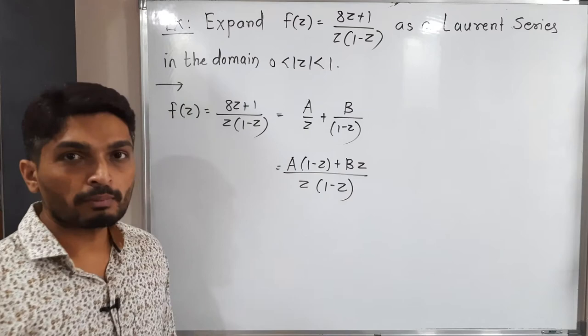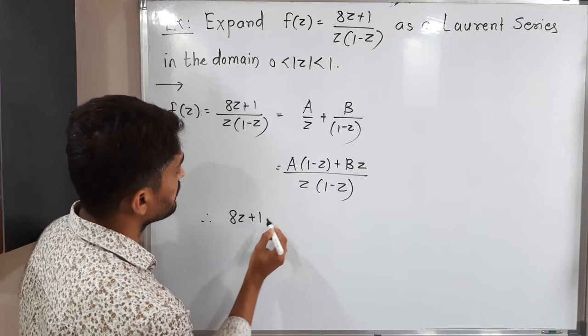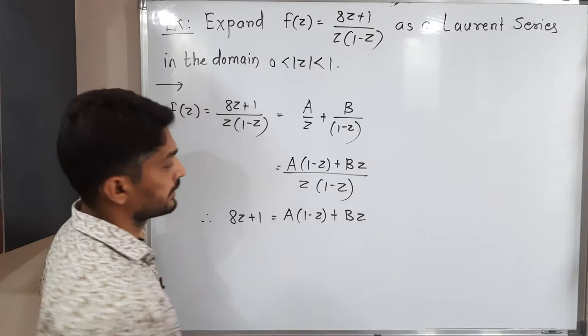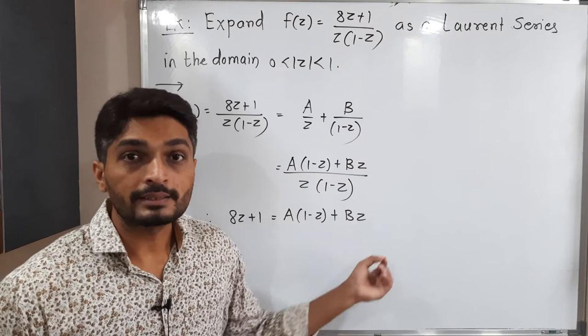A into 1 minus z plus b z divided by z times 1 minus z. Both of them have the same denominator. We can cancel and compare numerators only. z plus 1 is equal to a times 1 minus z plus b z. After that, what will I do?